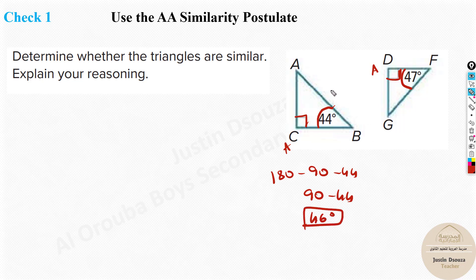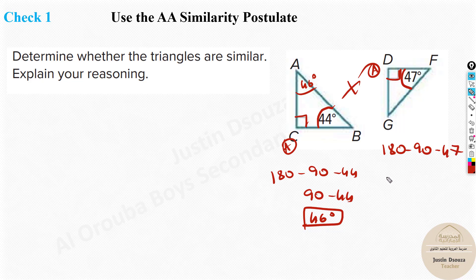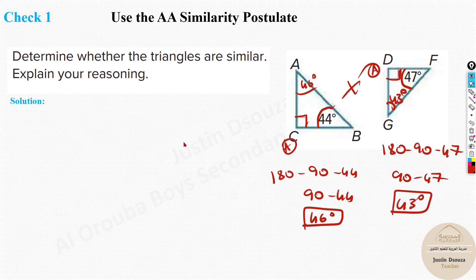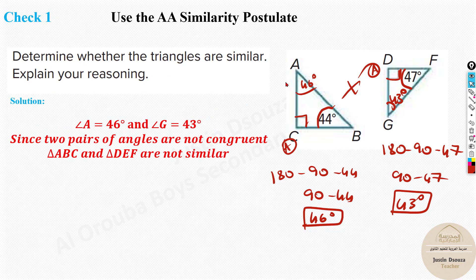For the first triangle: 180 minus 90 minus 44 equals 46°. Is 46° equal to 47°? No. Is 44° equal to 47°? No. For the second triangle: 180 minus 90 minus 47 equals 43°. So the angles are 46° and 43° - they are not the same. Since two pairs of angles are not congruent, triangle ABC and triangle DFG cannot be similar. They are not similar.